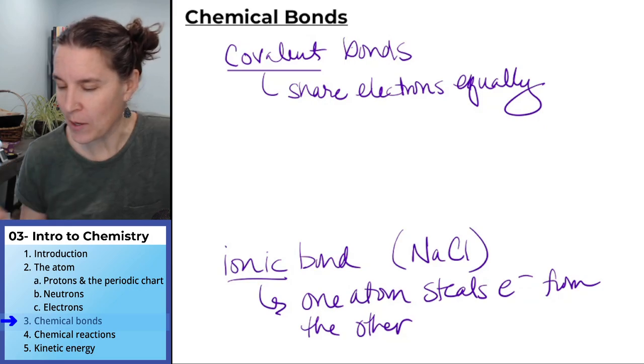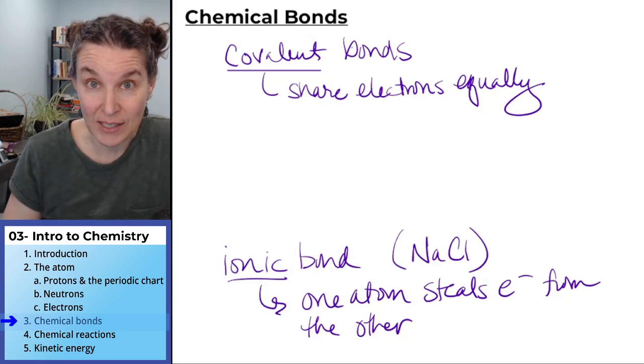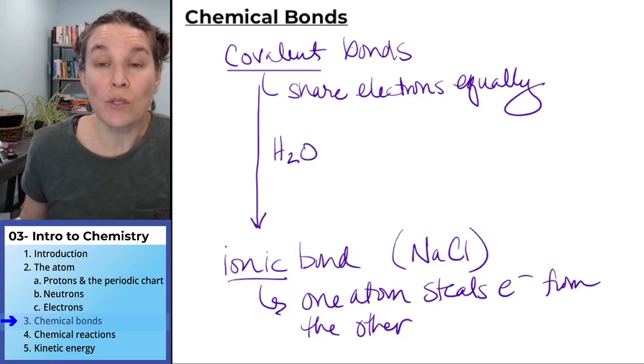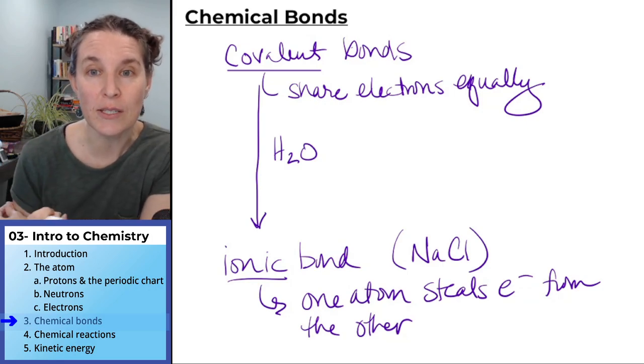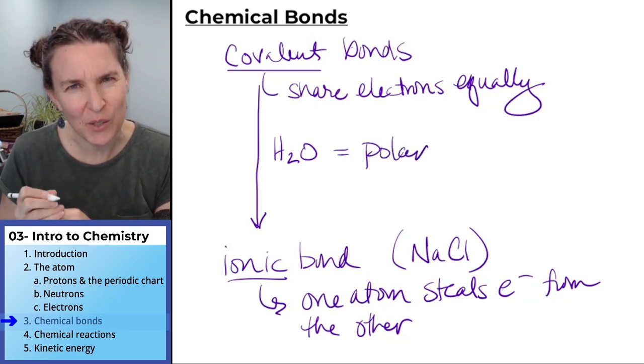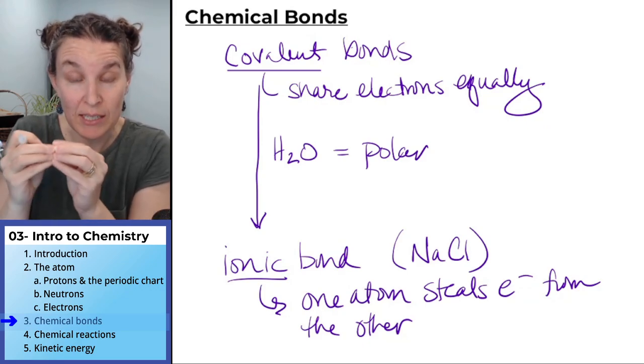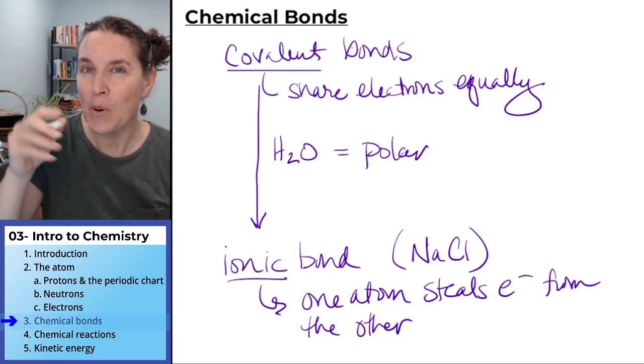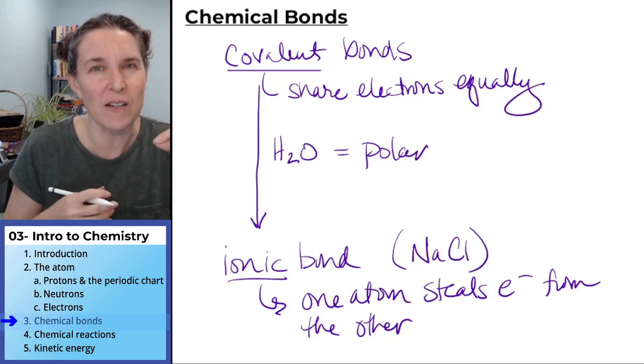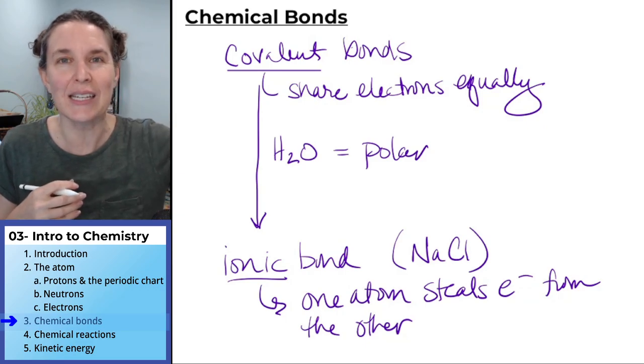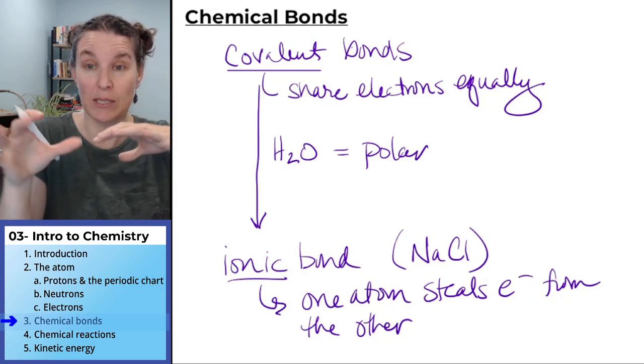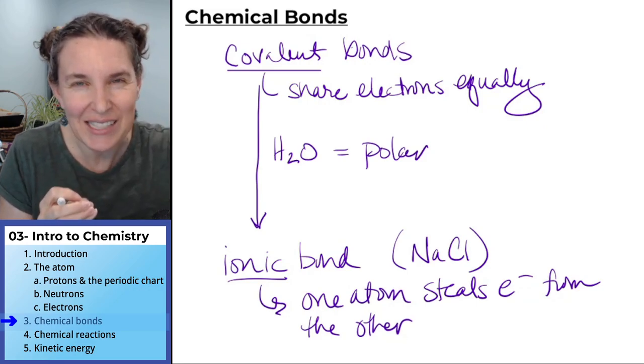You can imagine that maybe some molecules, water is one of them, some molecules hog the electrons a little bit more than others. And you can end up with a molecule that's polar. And a polar molecule has a covalent bond. They're sharing electrons. But one atom gets the electrons a little bit more than the other ones. So it ends up with a slightly negative charge, whereas the other atoms get a slightly positive charge, creating a polar molecule, not a completely charged molecule like that happens in the ionic bond, but a slightly charged molecule.